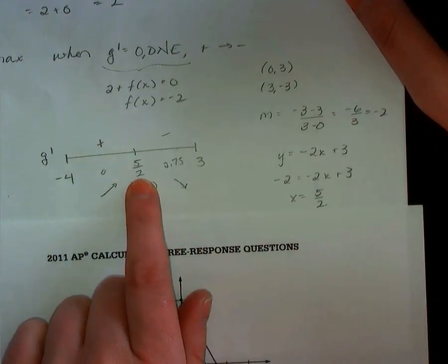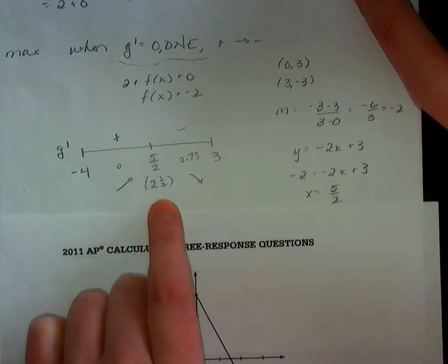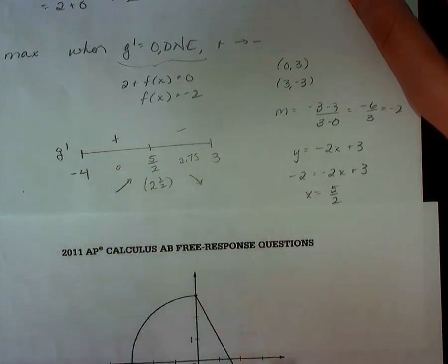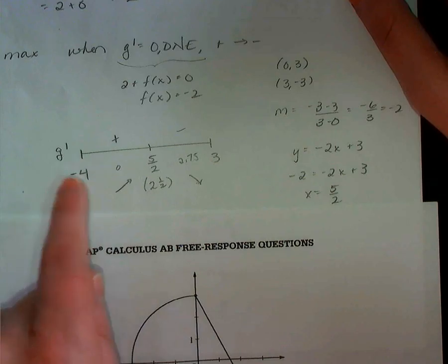That's where this comes into play. So x equals 5 halves, which is 2 and a half, goes on my number line. Closed interval, negative 4 to 3. I'm picking a point less than 2 and a half, so I pick 0.